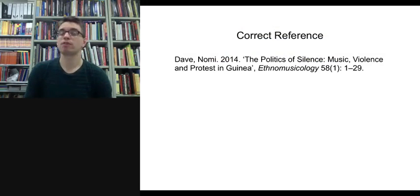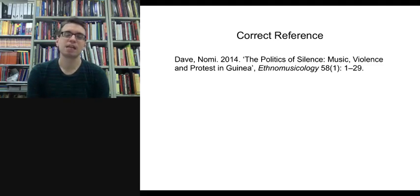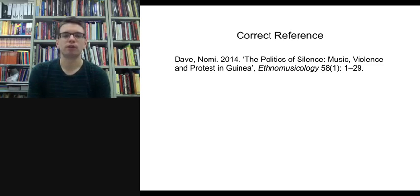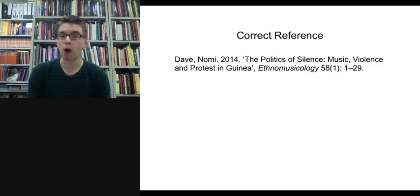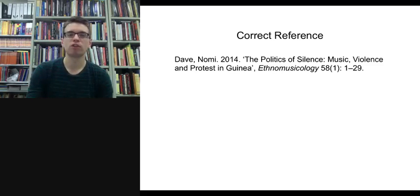Here is the correct reference. The author's surname is Dave and the first name is Nomi. It was published in 2014, and the title of the article in inverted commas is 'The Politics of Silence: Music, Violence and Protest in Guinea,' followed by the journal title Ethnomusicology in italics, then volume number 58, issue number 1 in brackets, colon, space, and pages 1–29, which is the full page range of the article.